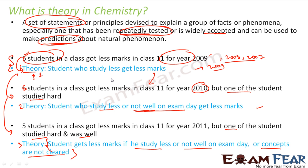Similarly, in the chemistry world, based on experiments and analysis, they give theories. These theories help us find the structure or the chemical properties of different molecules.